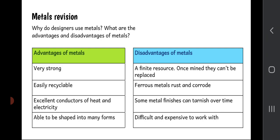Disadvantages of metals: they are ultimately a finite resource — once they've been mined and pulled out of the ground, they're gone. Ferrous metals, that is metals containing iron, will rust, and other metals also corrode. Some metal finishes can tarnish over time. Metals can also be expensive and difficult to work with — you need a lot of heat, pressure, furnaces, and factory tools to shape them properly.